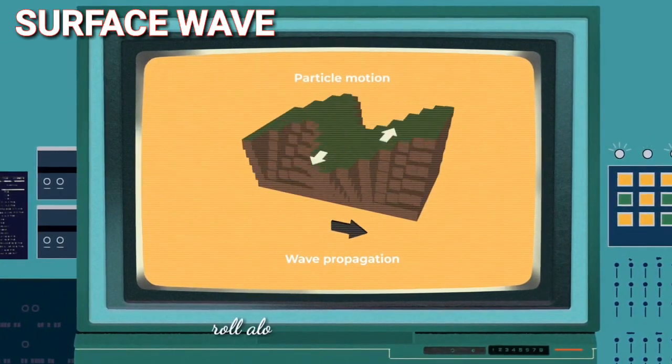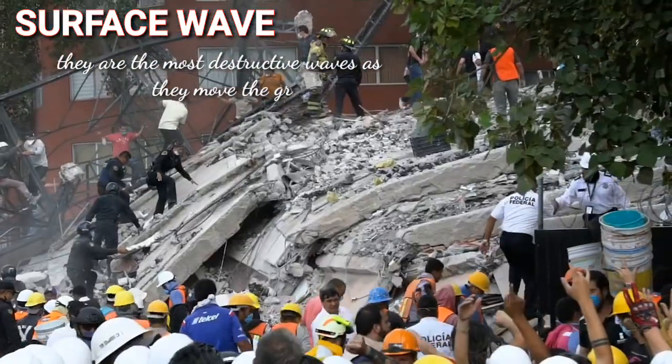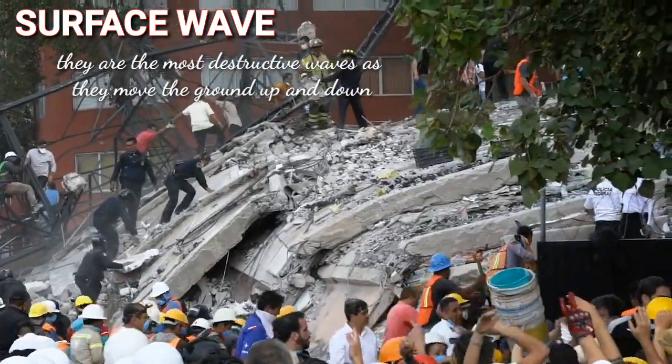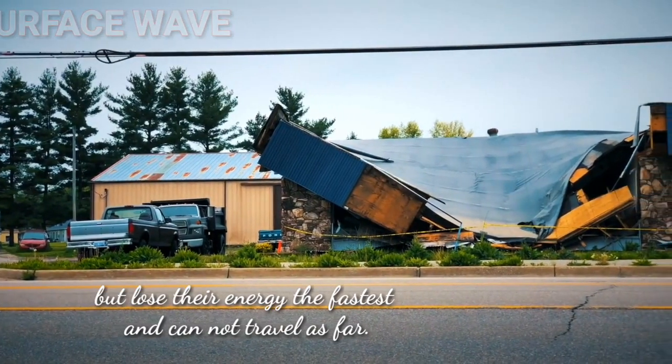Surface waves roll along the surface of the Earth. They are the most destructive waves as they move the ground up and down, but lose their energy the fastest and cannot travel as far.